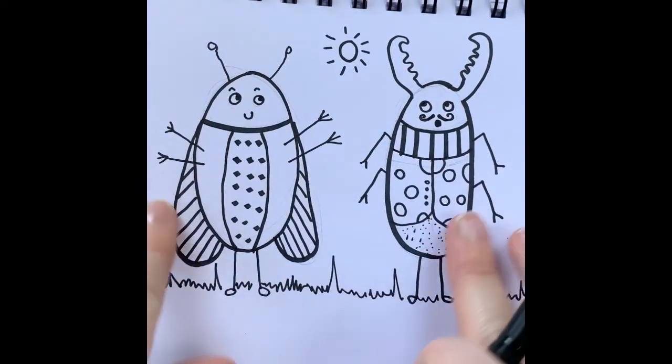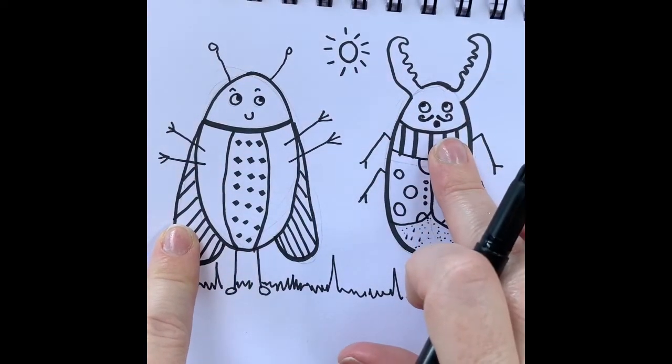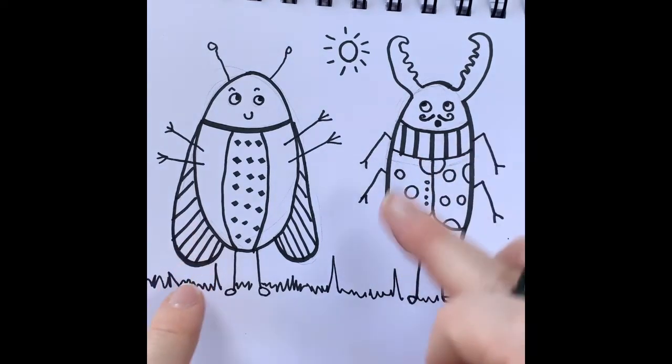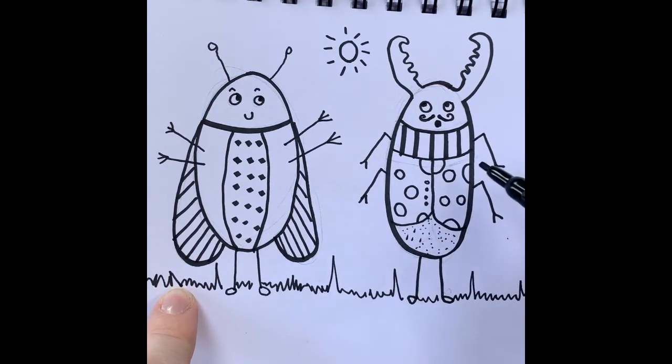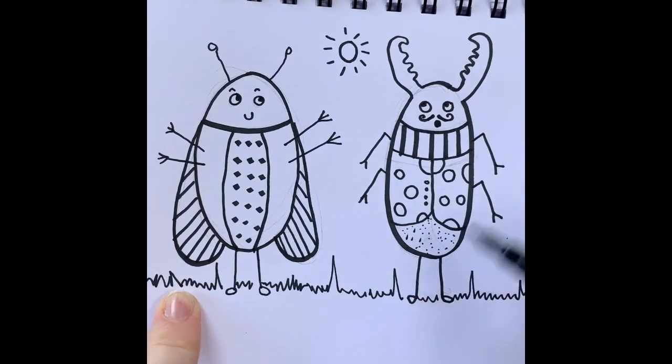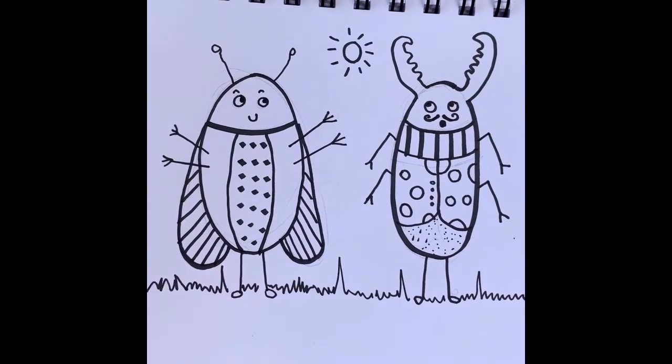So you could do lots of other expressions. You could create some more. So just do lots of oval shapes. Different expressions. You could have hats. You could have scarves. You could have hair if you want to. Then it's just your starting point.